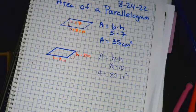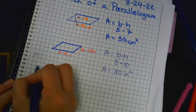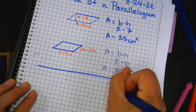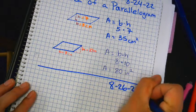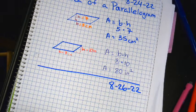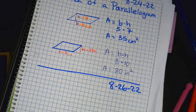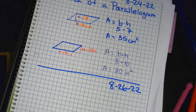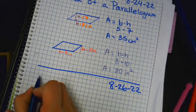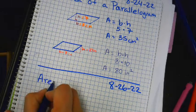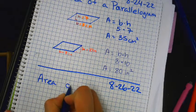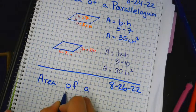All right, so today's date is 8-26-22, and we're going to have the area of a trapezoid.